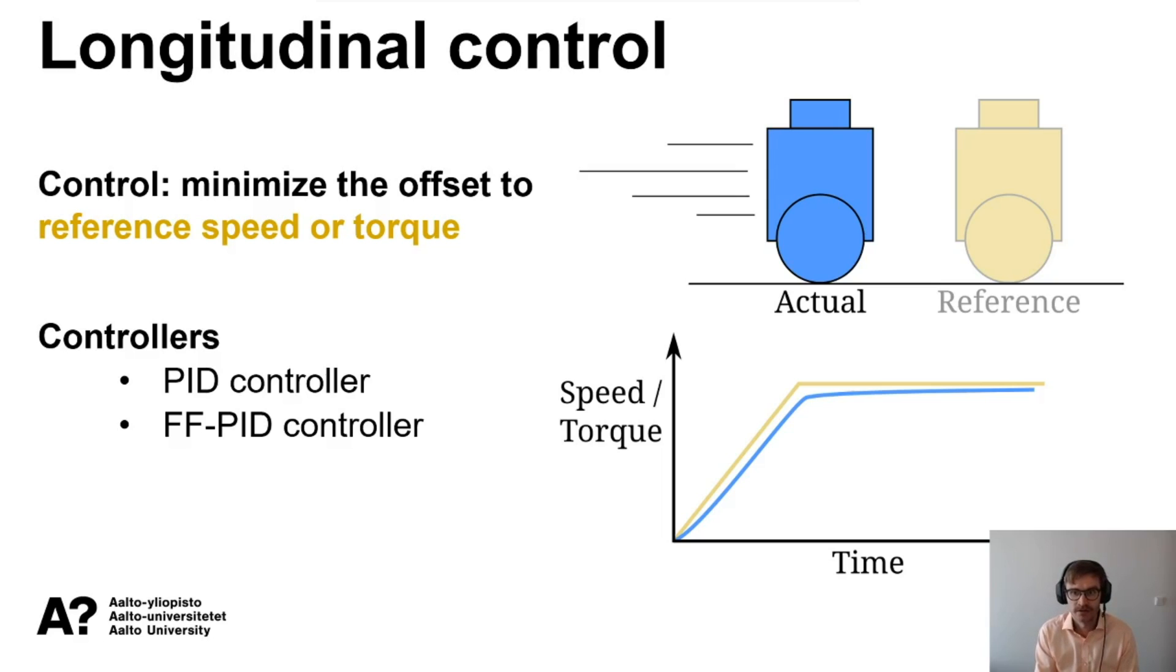What we're trying to do is achieve a reference torque or speed, most commonly speed because it's an easier value to interpret. Then trying to tune the controller in a way that the actual here in blue is as close as possible to the reference value that we have set. Here we will go over the PID controller and feedforward PID controller.